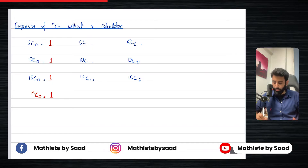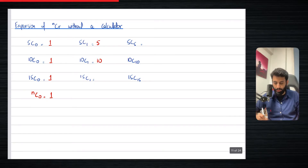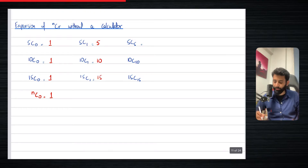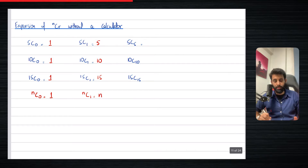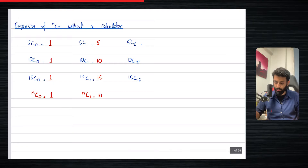If you work out 5C1 using your calculator, you'll notice that the answer is 5. If you work out 10C1, the answer is 10. If you work out 15C1, the answer is 15. So following the same pattern, NC1 is equal to N. So whatever value you have before C, as long as you have one right after C, it's going to be equal to the value that you had before C.